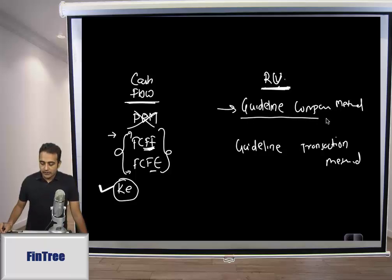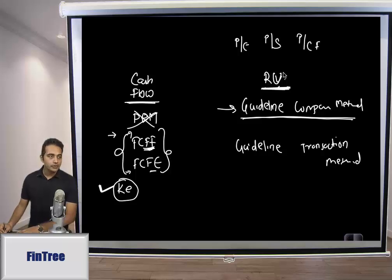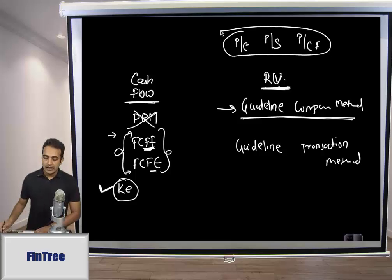In a guideline company method, if you are valuing a private company and there is a similar company which is listed, you find out what is the listed company's price earnings ratio or price to sales ratio or price to cash flow ratio, and then based on that you come up with a valuation. Once you have a valuation, this valuation is appropriate when the acquirer is trying to acquire a minority stake in the firm. If there is a majority stake transfer, then to this valuation you also have to add a control premium, and that methodology is referred to as guideline company valuation method.